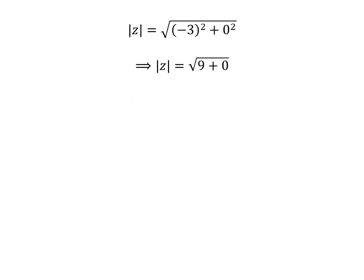As square of minus 3 is 9 and square of 0 is 0, so modulus of z is equal to square root of 9 plus 0. So modulus of z is equal to 3, which is equal to r.